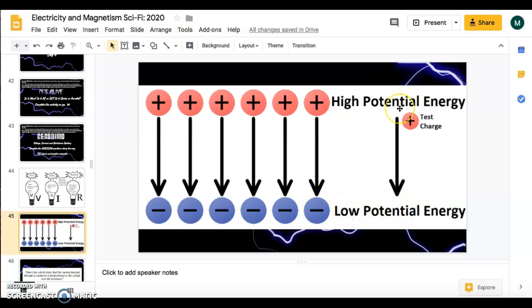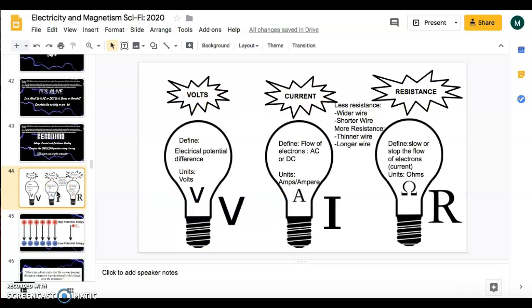That potential energy decreases as it attracts to the opposite charge. But it's because of that force, it's because of that potential difference, that actually allows these charges to create that loop of current going from positive to negative. So that's what our volts are. Now our volts are measured in V, and it's represented by the letter V.